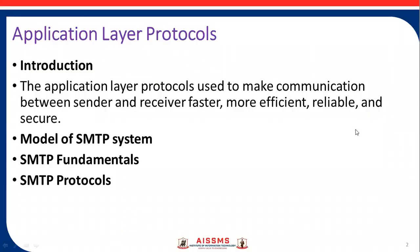Before that, what is an application layer protocol? In the application layer, protocols define how application processes — meaning clients and servers running on different end systems — pass messages to each other. An application layer is an abstract layer that handles the sharing protocols of the TCP/IP and OSI model. The application layer protocol is used to make communication between sender and receiver faster, more efficient, reliable, and secure.